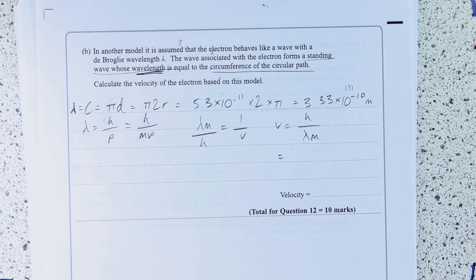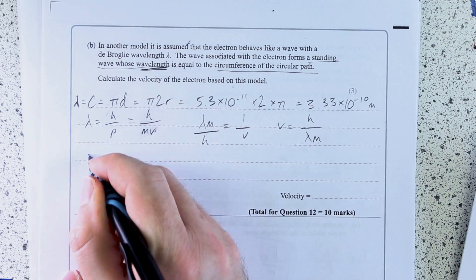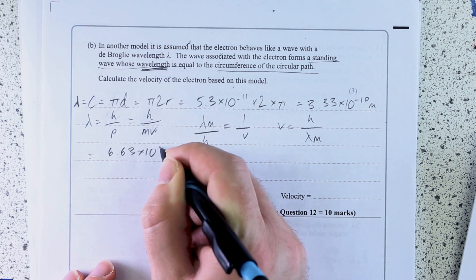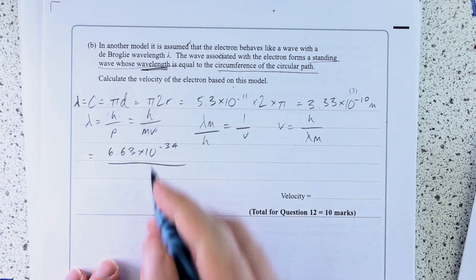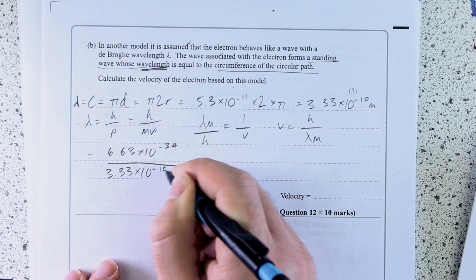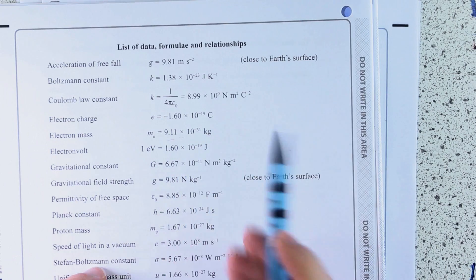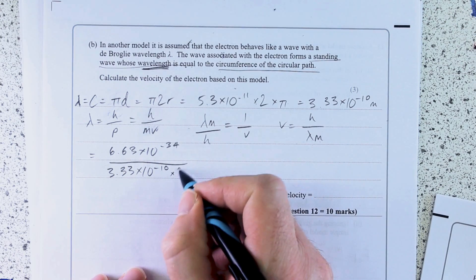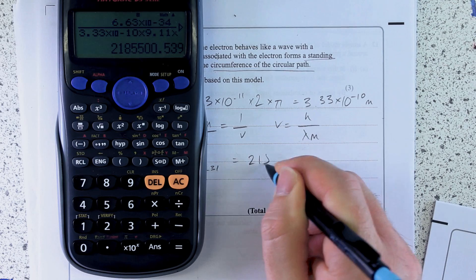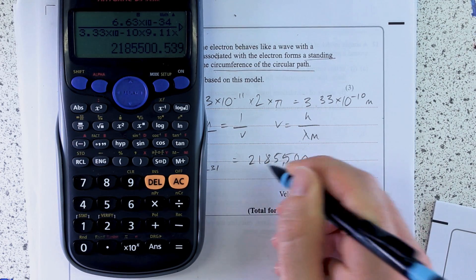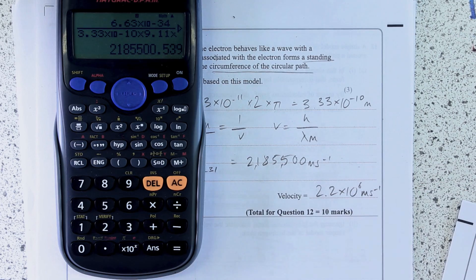So put that in. Planck's constant, 6.63 times 10 to the minus 34. Things like that can make you go that little bit quicker in the exam, which can be really useful, but don't do it unless you're absolutely sure, because we wouldn't want to make a mistake there. That's lambda, so m is the mass of an electron, 9.11 times 10 to the minus 31. It's actually 2.2 times 10 to the 6 meters per second.